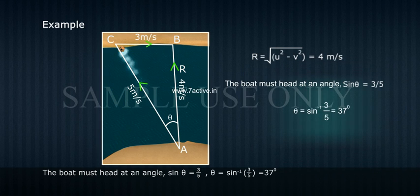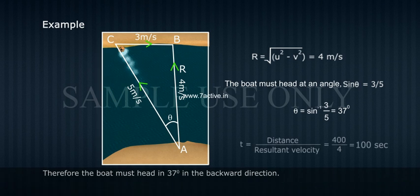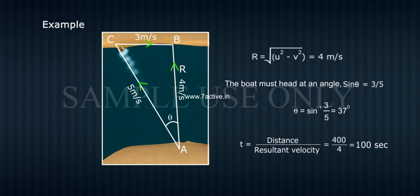Theta equals sin inverse 3 by 5 equals 37 degrees. Therefore, the boat must head at 37 degrees in the backward direction. The time taken to cross is t equals distance divided by resultant velocity equals 400 divided by 4 equals 100 seconds.